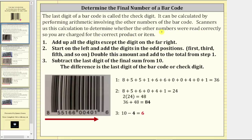Looking at the barcode below, let's look at the calculation to determine the check digit, which for this barcode is the six on the far right. Step one: we add up all the digits except the digit on the far right. Starting on the left, this means we determine the sum of 8, 5, 5, 1, 6, 6, 0, 0, 4, 0, 1, which has a sum of 36.